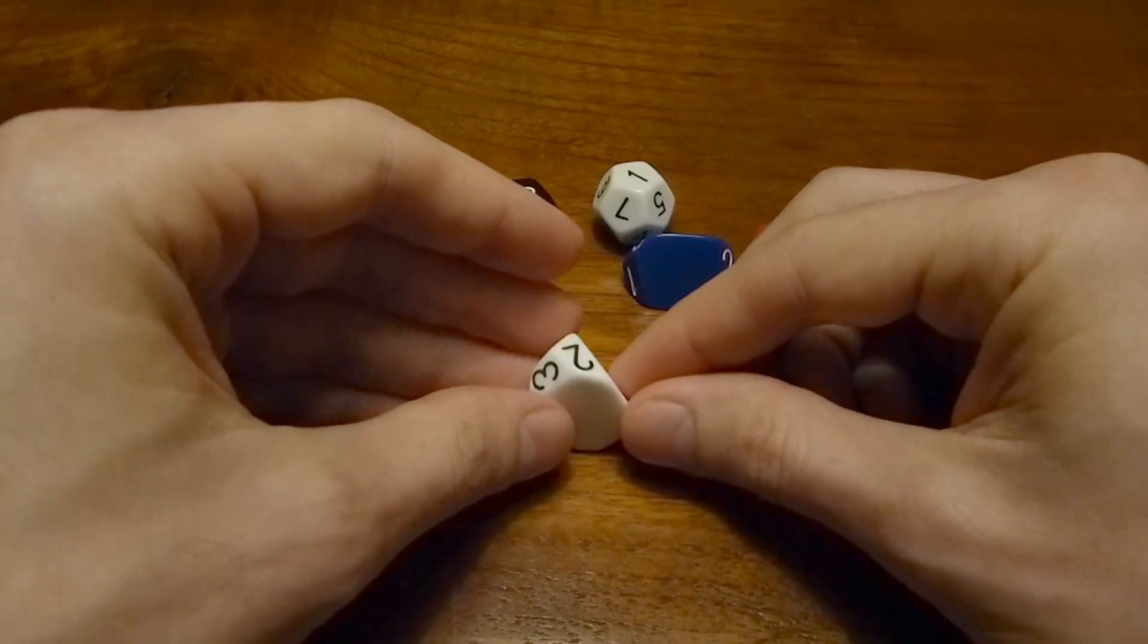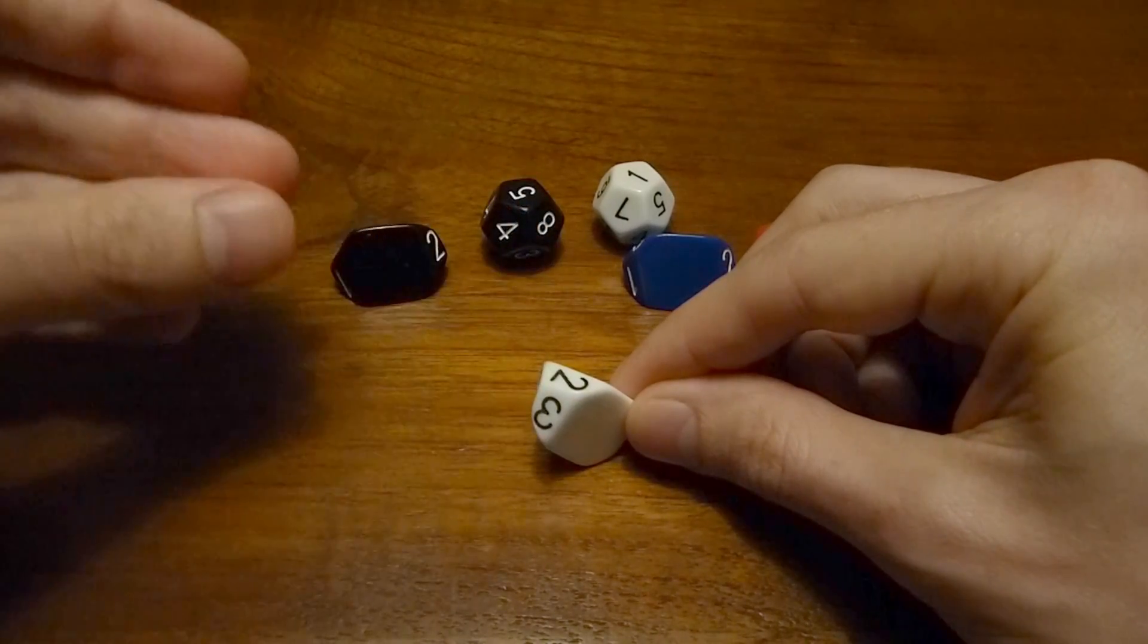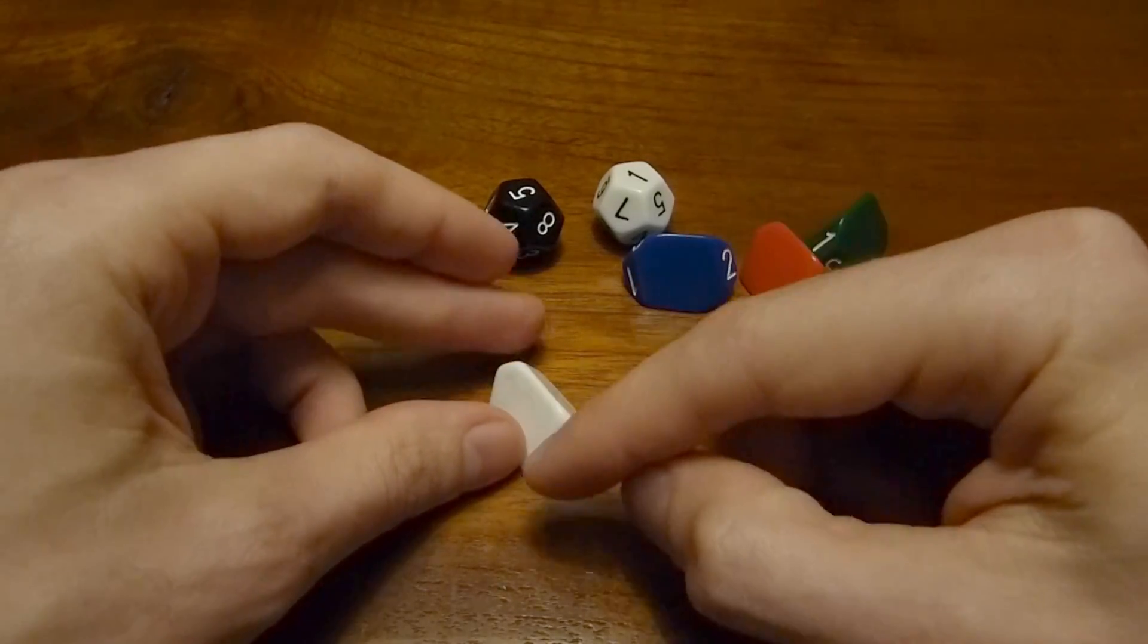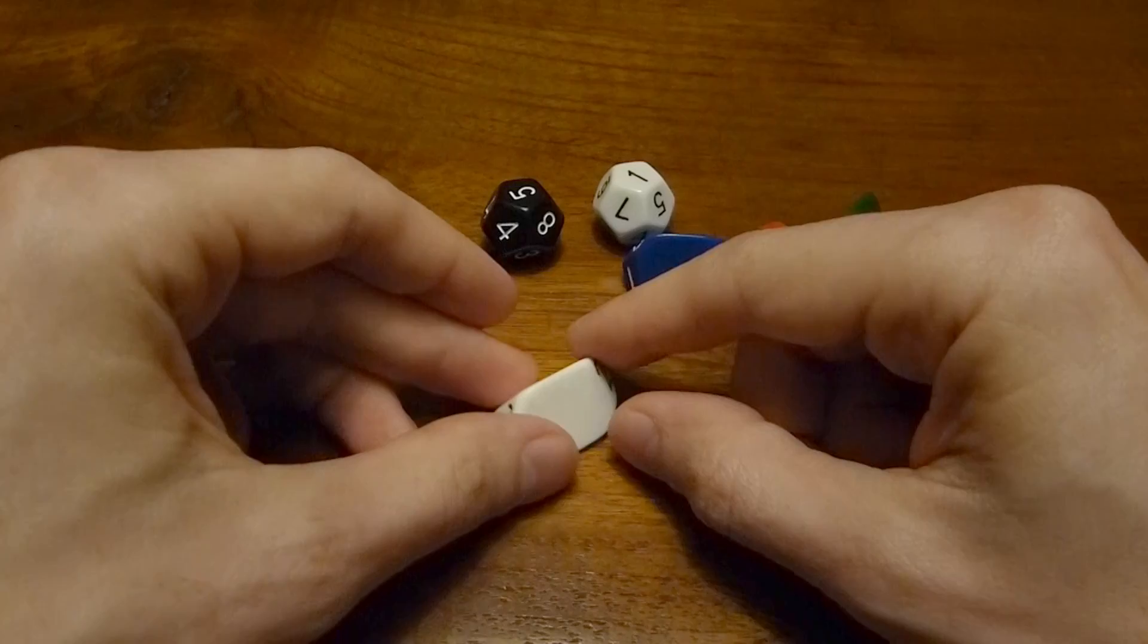If you try and stand it up on one of the numbered faces, it will always fall down, and then you read the number just by which one is pointing upwards on the two ends.